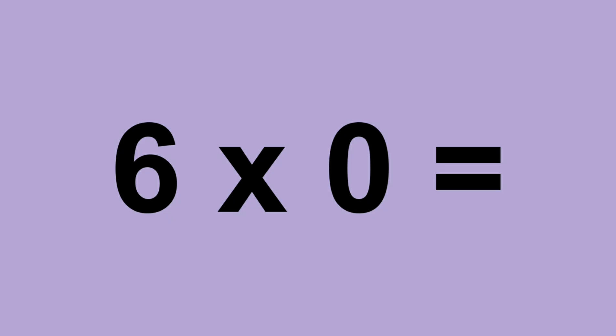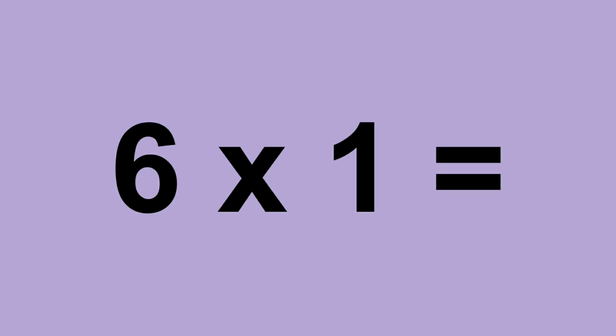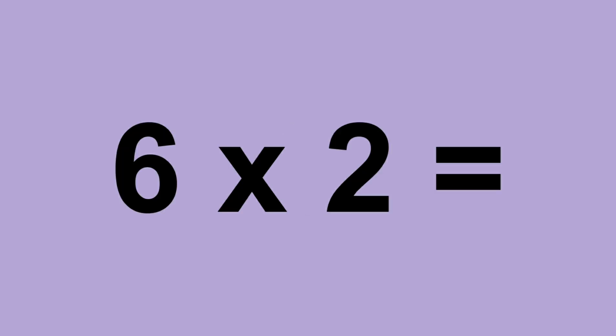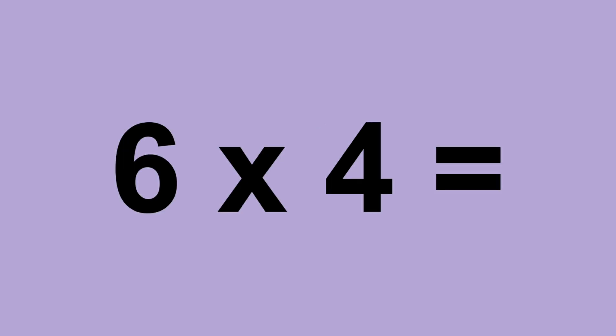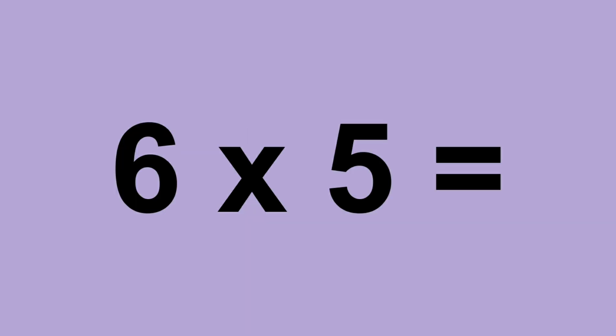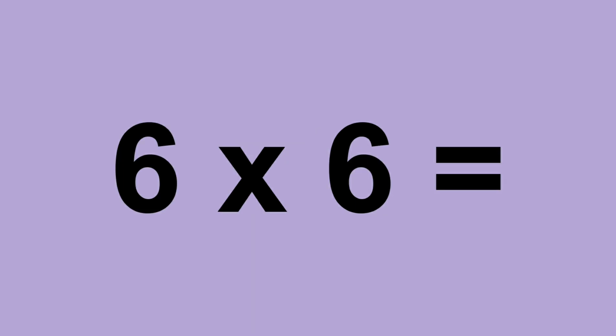Six times zero equals zero. Six times one equals six. Six times two equals twelve. Six times three equals eighteen. Six times four equals twenty-four. Six times five equals thirty. Six times six equals thirty-six. Six times seven equals forty-two.